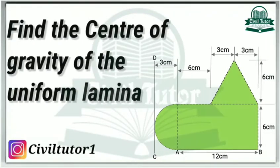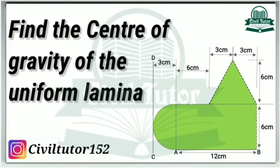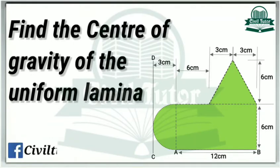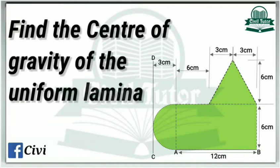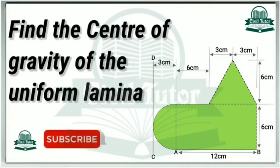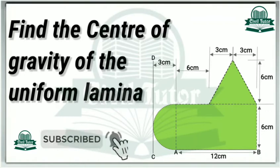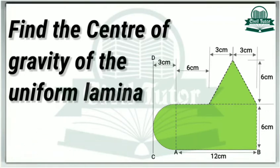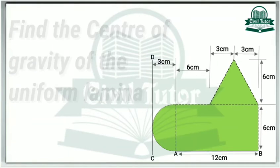In this tutorial I will solve a numerical in which we have to find the center of gravity of a uniform lamina which is a composite section. Before starting, if you didn't subscribe my YouTube channel Civil Tutor please subscribe it and don't forget to press the bell icon so that you don't miss any updates in future. Now let's start with our today's tutorial.